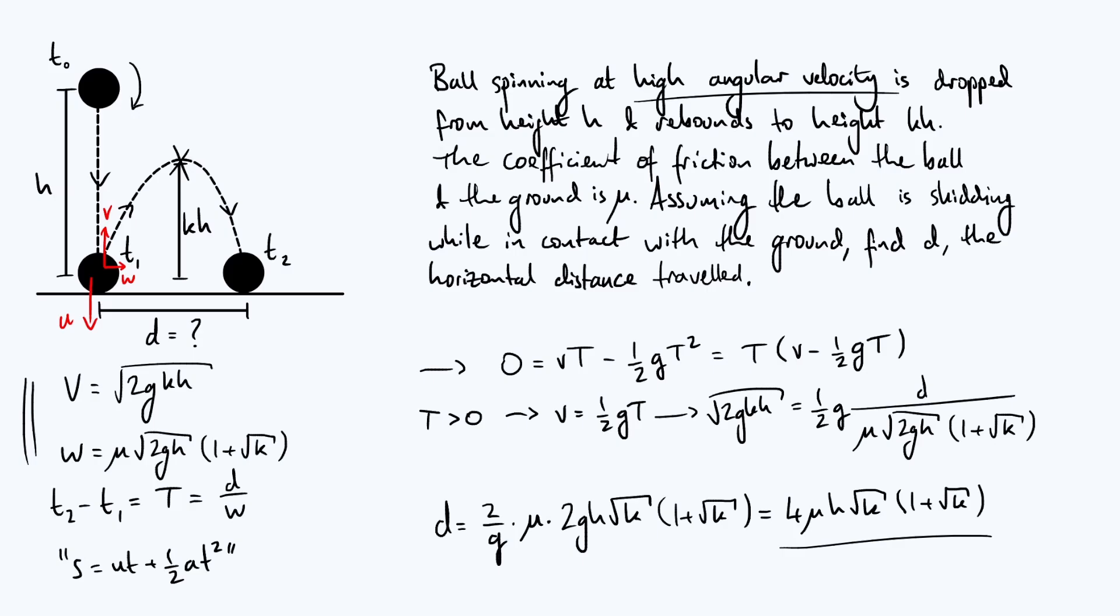Again, as I mentioned earlier, probably the most surprising thing about this is it doesn't explicitly depend on the angular velocity. It kind of depends on the angular velocity in the sense that the angular velocity has to be high enough that it keeps skidding and doesn't start rolling while it's in contact with the ground. But once you've reached that threshold, the faster you spin it, you can't make the friction any bigger and therefore omega doesn't appear in our result.